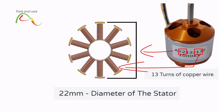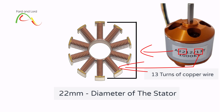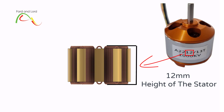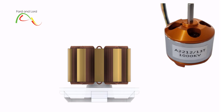The remaining two numbers — 12 in this case — describe the height of the stator, also in millimeters, meaning the height of the stator is 12 millimeters. The third parameter after the slash is 13T, which usually, but not always, describes the number of copper wire windings on each arm of the stator.